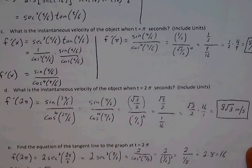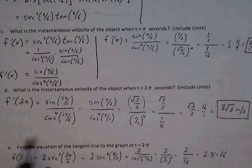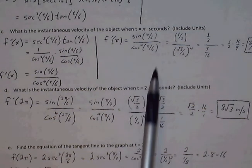In part D, what is instantaneous velocity when t is 2 pi seconds? So similar to part C, instead of plugging in pi, we're now plugging in 2 pi.